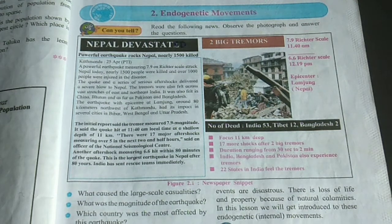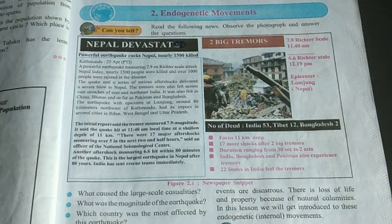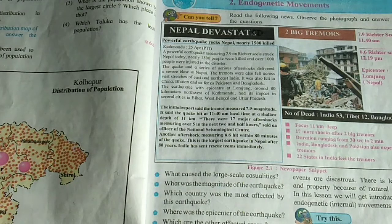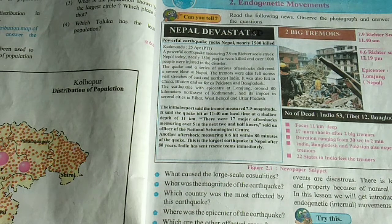There are many endogenic processes. They include faulting, folding and volcanism. When these processes occur, they make way for different landforms on earth to be created. For instance, when we see volcanoes or mountains, it is an endogenous process that allowed for that to occur. Despite not feeling it, these processes are extremely important to our world.